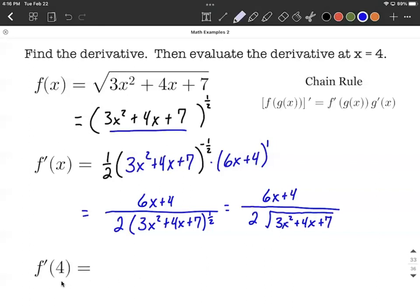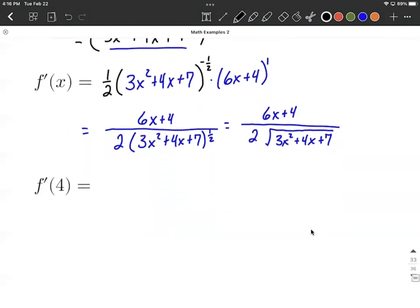But now let's evaluate this derivative at 4. To evaluate it, we simply need to replace each of the x's with 4's and then simplify down. So that's going to look like 6 times 4 plus 4 up in our numerator.